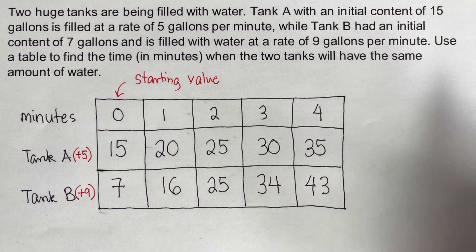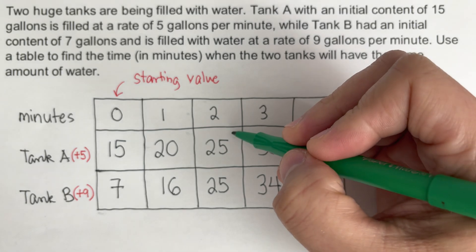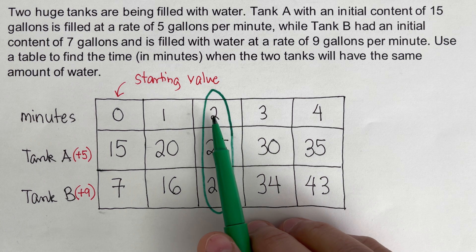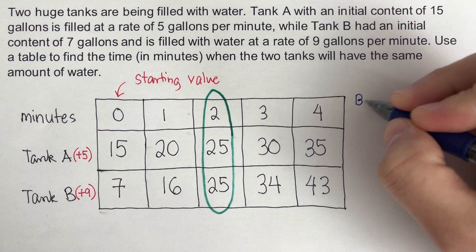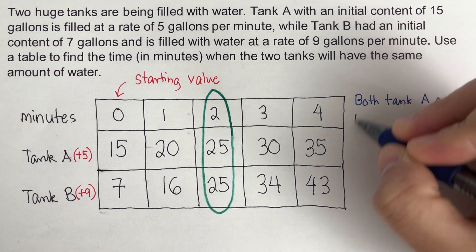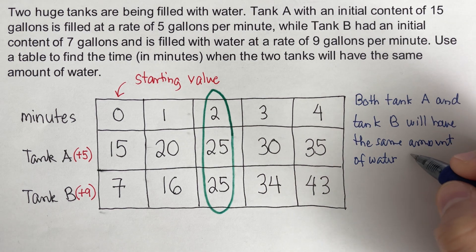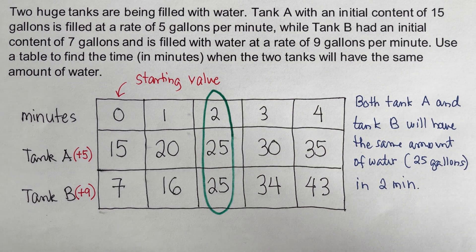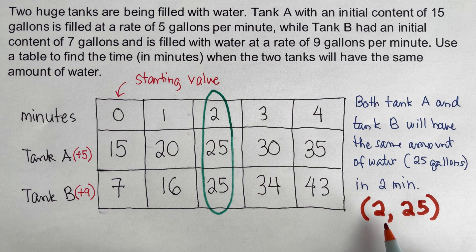In the problem, we are asked to use a table to find the time in minutes when the two tanks will have the same amount of water. As you can see, both tanks will have the same amount on the second minute — 25 gallons. So after two minutes, both tanks will have the same level of water, which is 25 gallons. We can also write our solution in coordinate form: (2, 25). That means if we convert these problems into linear equations and graph them, they will intersect at (2, 25).